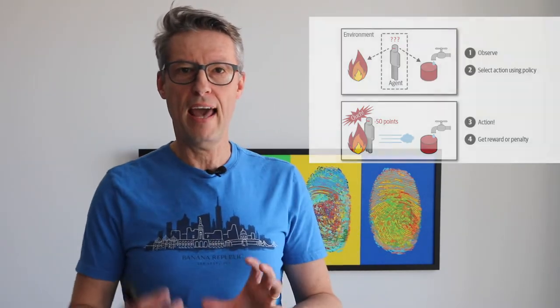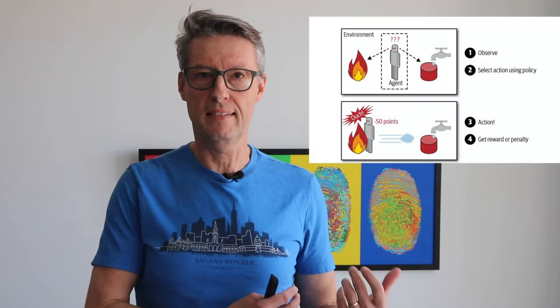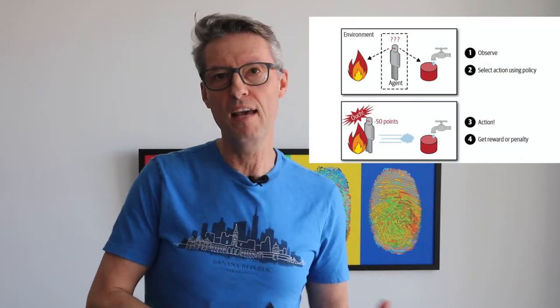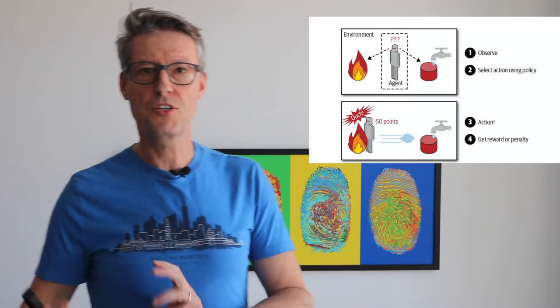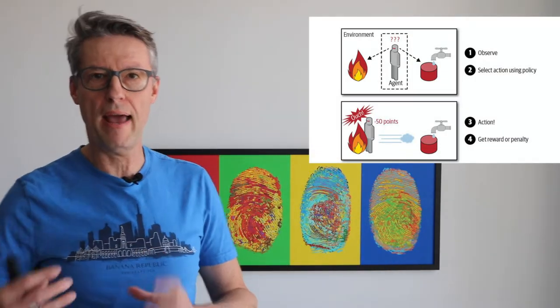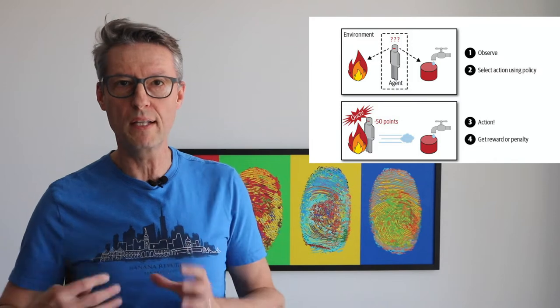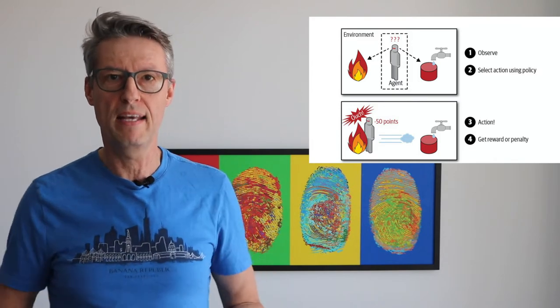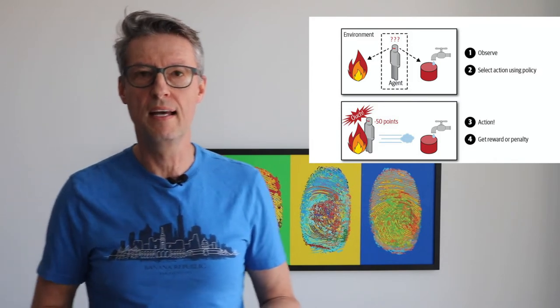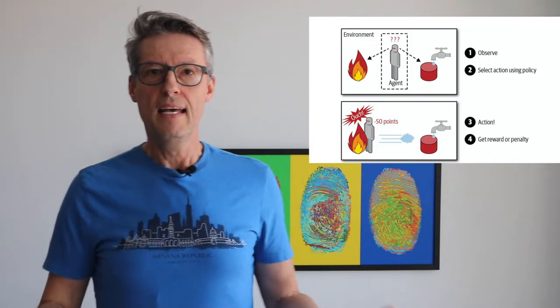And if the action is something that is not good and the result is not great, the agent will probably receive a penalty. Or if the action is great in the direction that we want, because we provide the policy, then the agent knows it's great and can repeat that action.